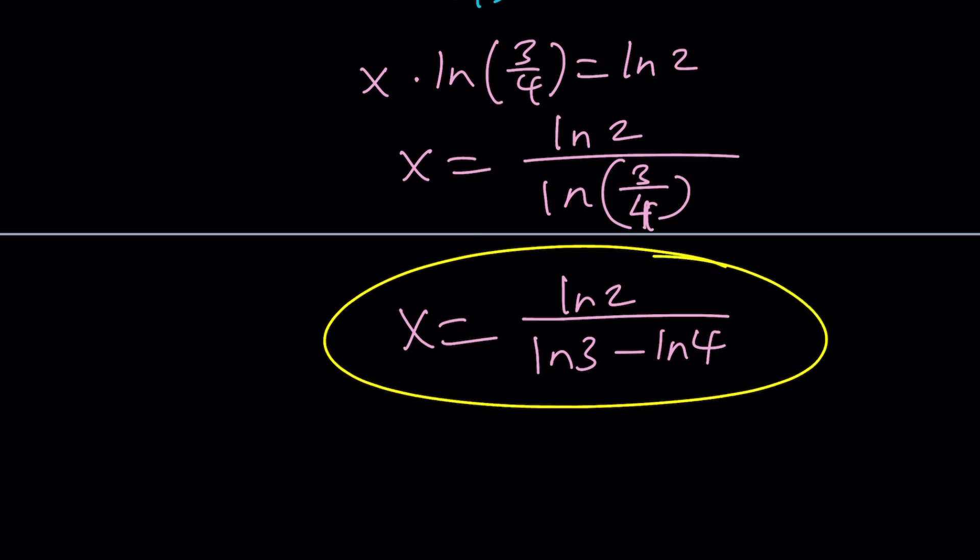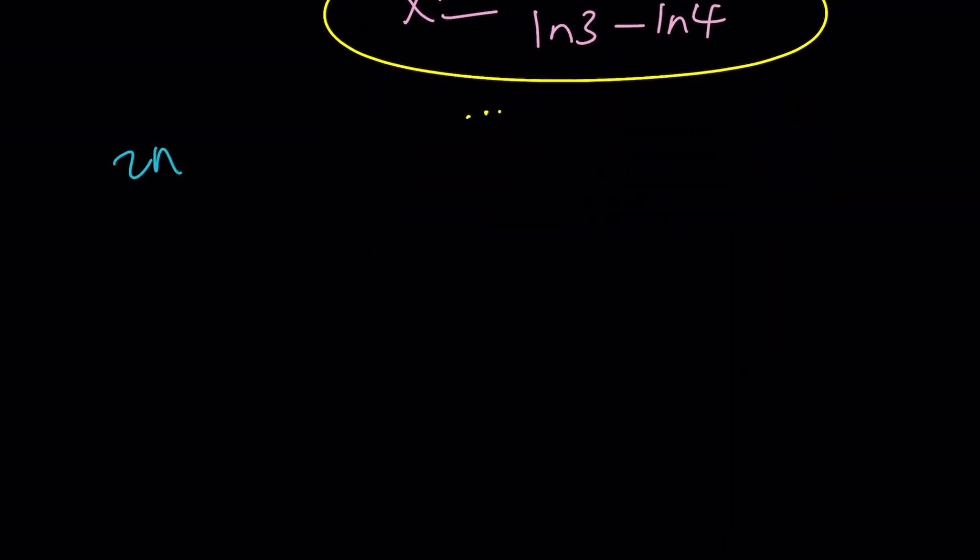And similarly for the other one, you can do pretty much the same thing except ln 2 will be replaced with ln 3. So these are the solutions. They are the real solutions. But are there any complex solutions? Maybe. Let's take a look at the second approach first. And then we will check some complex solutions.